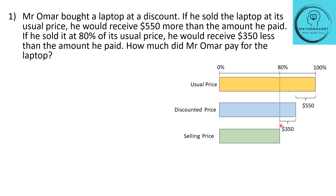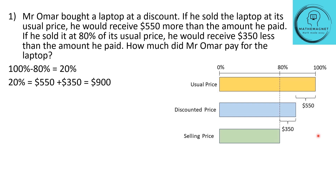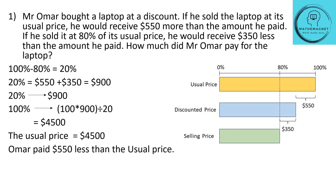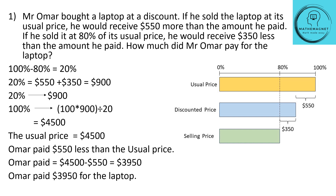Because if he sold at 80%, he will be getting $350 less than what he paid — selling at a loss. So 20% = 550 + 350 = $900. Now 20% is $900, so 100% (the usual price) will be 100 × 900 ÷ 20 = $4500. The usual price of the laptop is $4500. Omar paid $550 less than the usual price, so the discounted price is 4500 − 550 = $3950. Omar paid $3950 for the laptop.